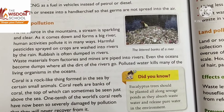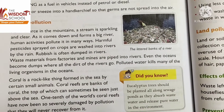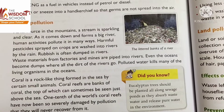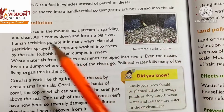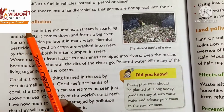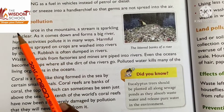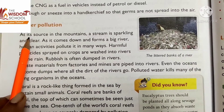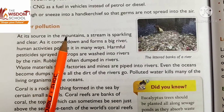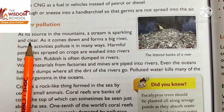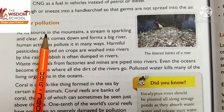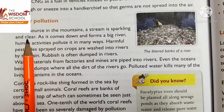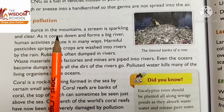Good morning students, welcome to your EBS class. Today we are going to complete reading of chapter 24 - Pollution. Today's topic is water pollution. As its source in the mountains, a stream is sparkling and clear.